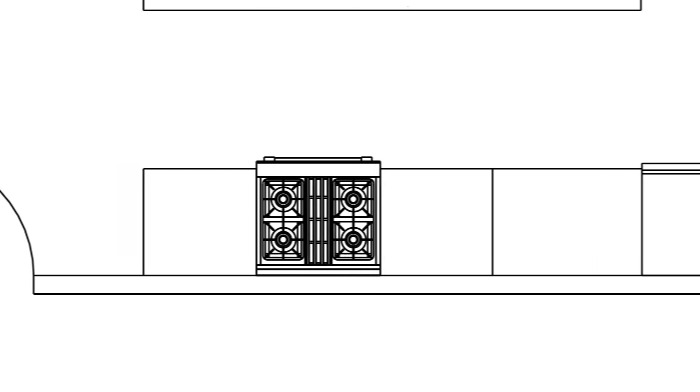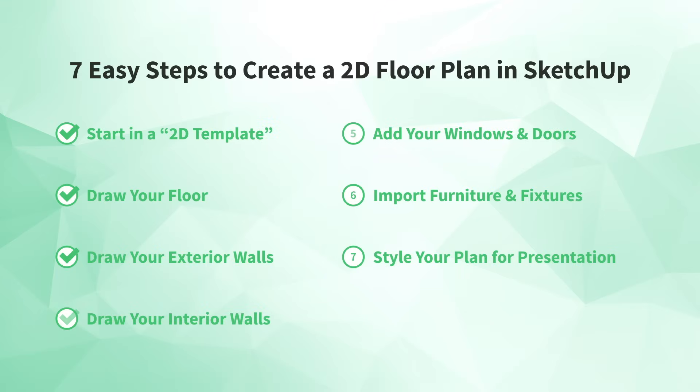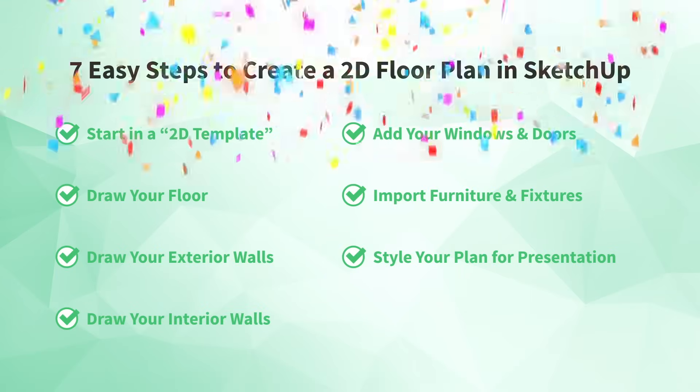Know that image files, like JPEGs, will be rasterized or have a set pixel dimension, which means that the line work may not be crisp depending on how you plan to size and present the final image. PDFs will be vector files, which will show crisp line work at any size. And that's it, congratulations! You made it through all seven steps to create your first floor plan in SketchUp.